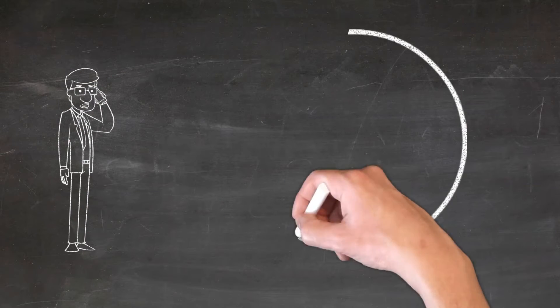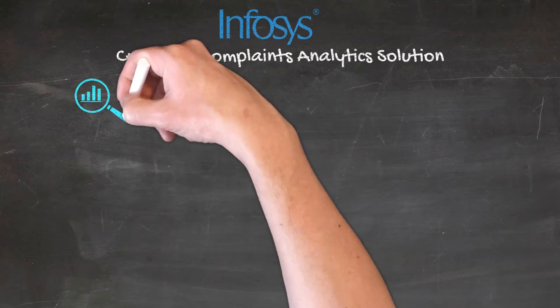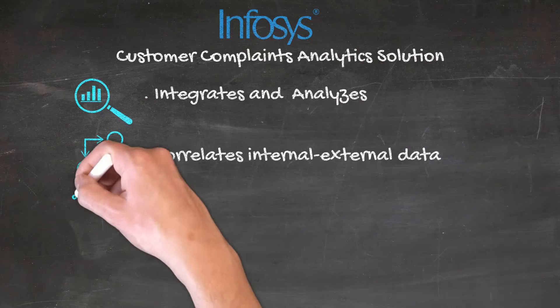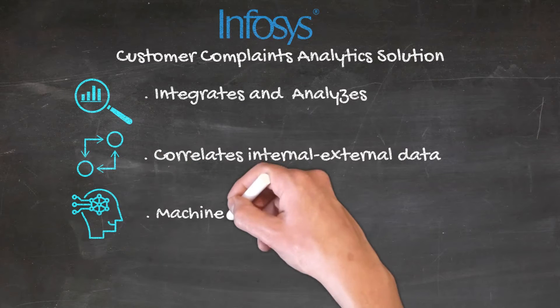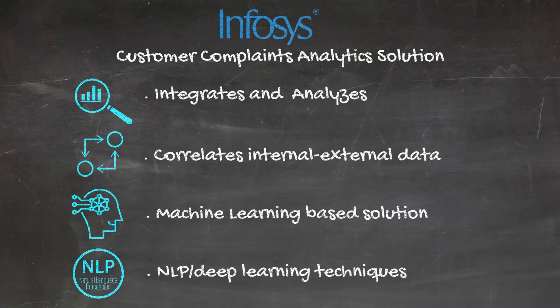John reached out to Bank One's trusted partner, Infosys, for a potential solution. Infosys came up with a solution that integrates, analyzes, and correlates data from the regulatory body and internal complaints using machine learning and NLP deep learning techniques.